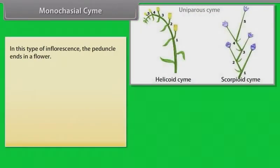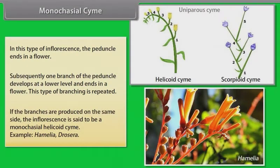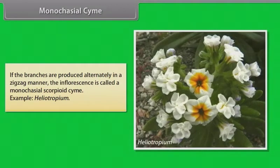In monochasial cyme, the peduncle ends in a flower, subsequently one branch of the peduncle develops at a lower level and ends in a flower, and this type of branching is repeated. If the branches are produced on the same side, the inflorescence is a monochasial helicoid cyme — example: Hamelia, Drosera. If the branches are produced alternately in a zigzag manner, it is called a monochasial scorpioid cyme — example: Heliotropium.